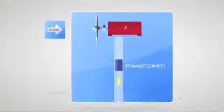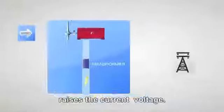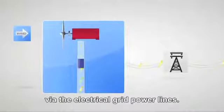Subsequently, a transformer, located inside the nacelle or tower, raises the current voltage. This allows it to be transported more efficiently via the electrical grid power lines.